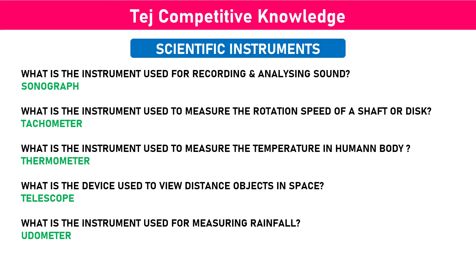What is the instrument used to measure the rotation speed of a shaft or disc? Tachometer. What is the instrument used to measure the temperature in the human body? Thermometer. What is the device used to view distant objects in space? Telescope. What is the instrument used for measuring rainfall? Codometer.